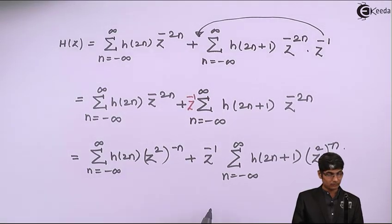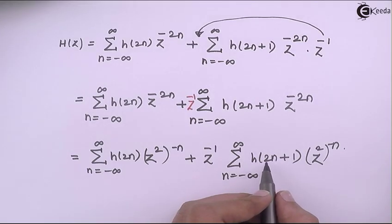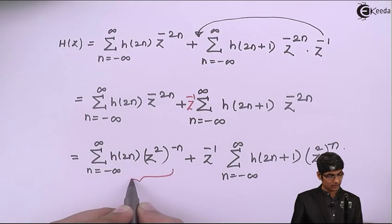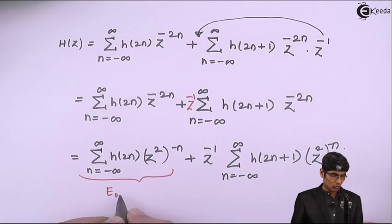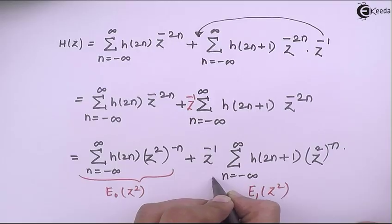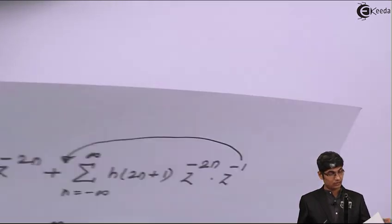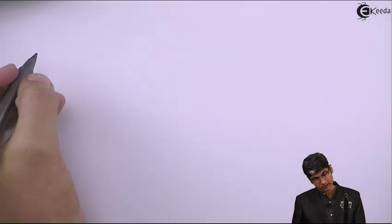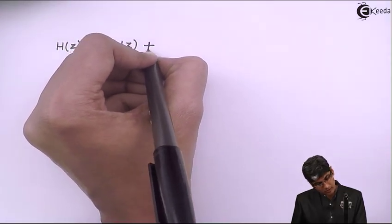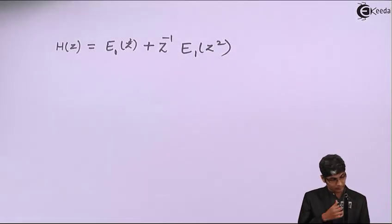With further adjustment: summation of h(2n) (z²) raised to minus n plus z inverse times summation of h(2n+1) (z²) raised to minus n. This is a z-transform of h(2n) evaluated at z², and similarly for h(2n+1). I write these as E₀(z²) and E₁(z²) respectively, giving two sub-filters.